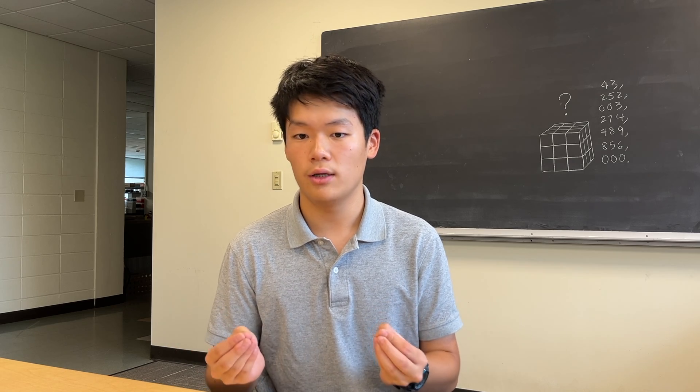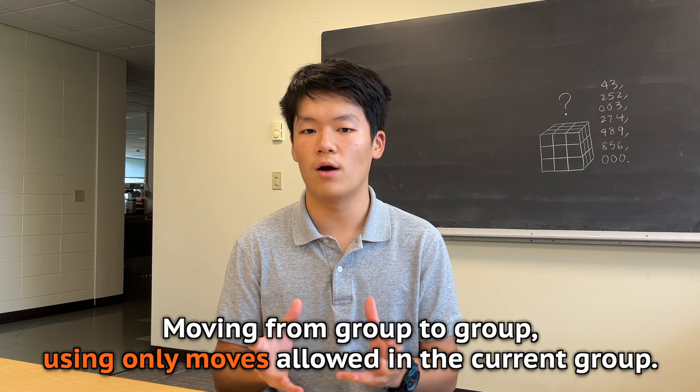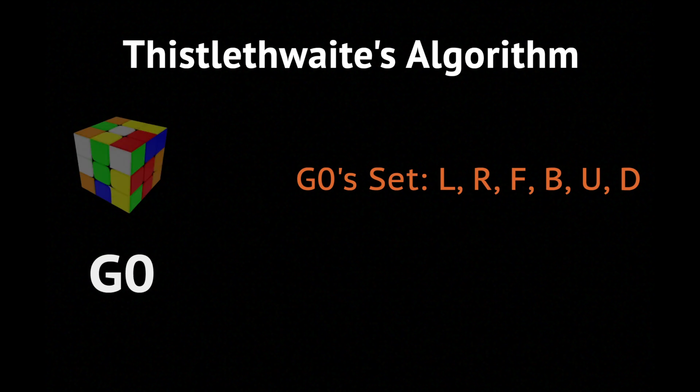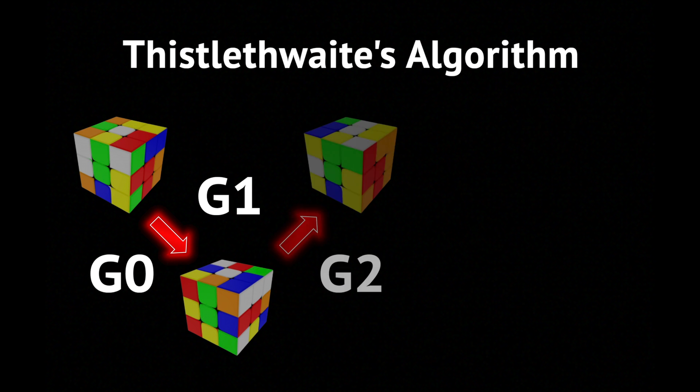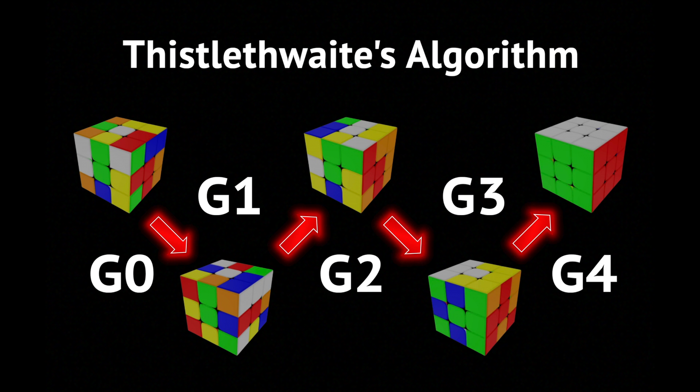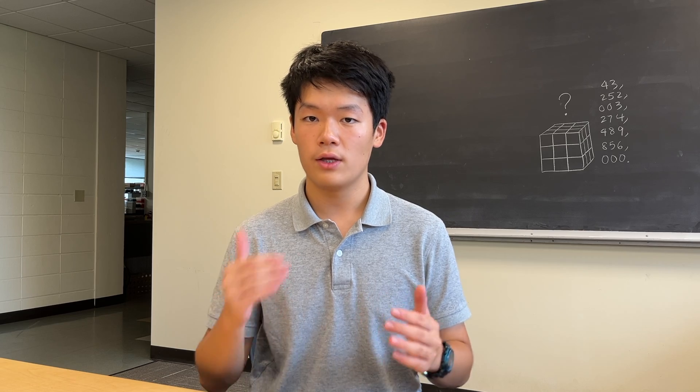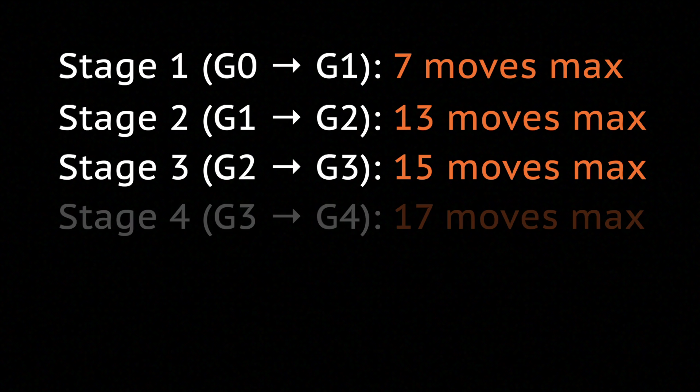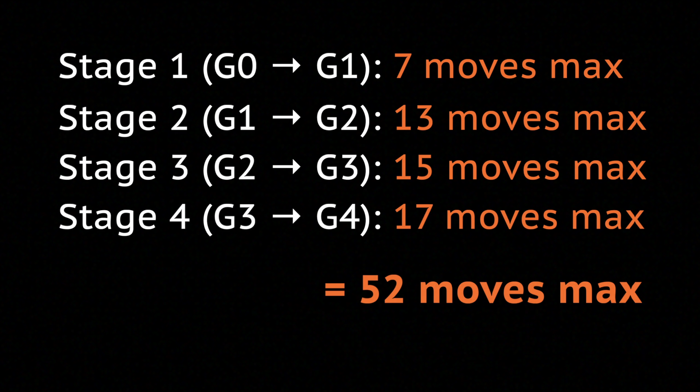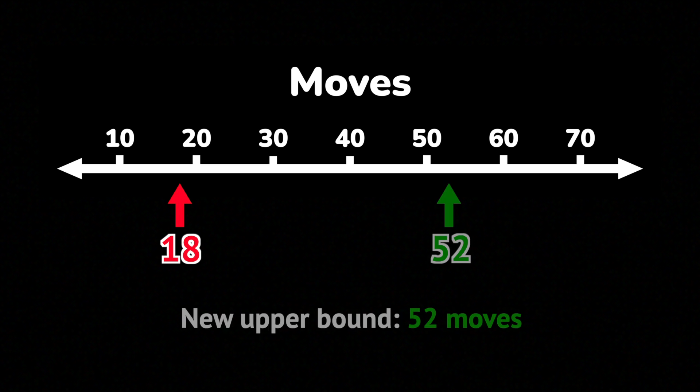Using Thistlethwaite's strategy, the cube is solved by moving from group to group using only moves allowed in the current group. For example, from a G0 scramble, the cube could be reduced to a scramble in G1 using only the G0 set of moves. Once in G1, quarter turns of the U and D faces are no longer allowed. And using G1 set of moves, the cube can be further reduced to a scramble in G2, and so on. This continues until G4, which is the solved cube. Using this reduction method, Thistlethwaite was able to exhaustively calculate the maximum number of moves needed to bring any state in G0 to a state in G1, any state in G1 to G2, G2 to G3, and G3 to G4. The sum of these values formed a new upper bound for God's number, and that is 52 moves.